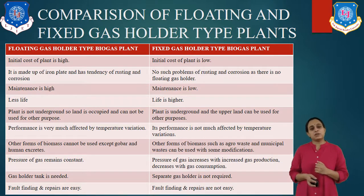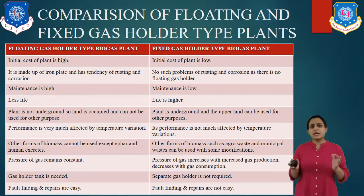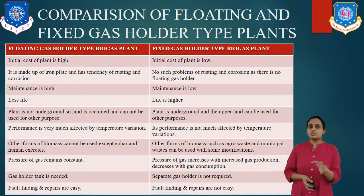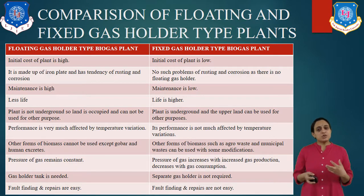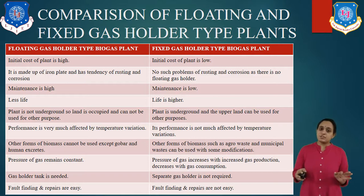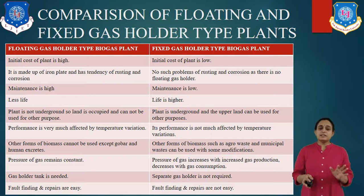For the fixed gas holder type biogas plant: initial cost is obviously low; there is no significant problem of rusting because it is made of brickwork with no floating gas holder; maintenance is low and life is high. The plant is underground and the upper land can be used for other purposes. Performance is not much affected by temperature, and other forms of biomass such as agro-waste and municipal waste can also be used with some modifications. Pressure of the gas increases with increased gas production and decreases with gas consumption. A separate gas holder is not required, but fault finding and repair is a bit difficult.